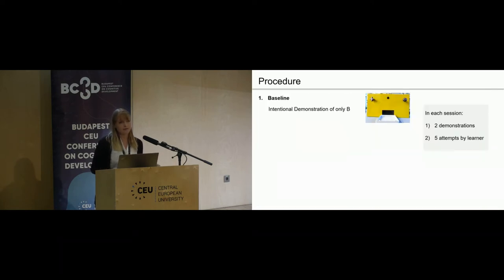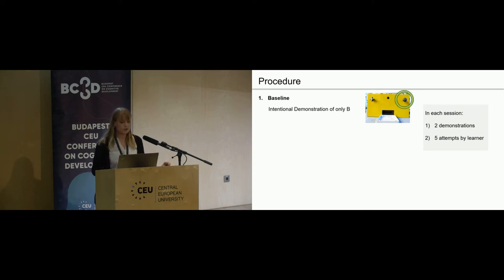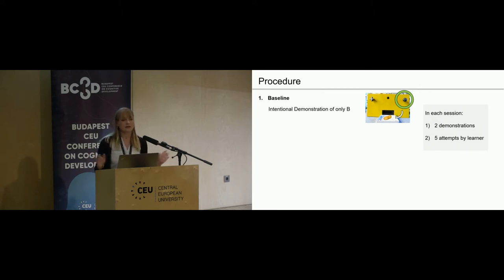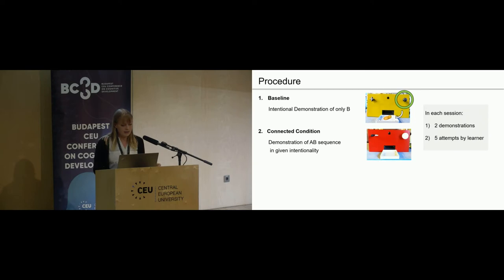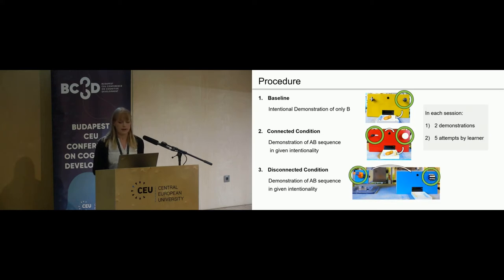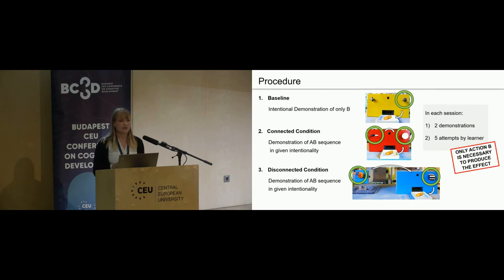Before the experimental conditions, every participant had a baseline session in which they saw an intentional demonstration of only one action—action B—followed by the reward. This was done to see if they attend to the social demonstration and can follow that social cue. Members of all species did, more than chance, start with action B that was also demonstrated and not with action A. Then we presented the first experimental session—either the connected or disconnected condition—in which we demonstrated the A-B reward sequence. In each session we showed two demonstrations followed by five attempts of the learner. Importantly, only action B was ever really necessary to produce the effect—so A was the unnecessary action.